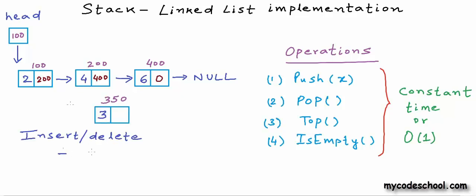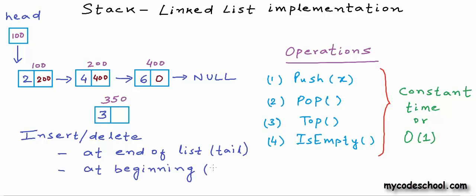We have two options. We can insert or delete from the end of the list, what we also call the tail, or from the beginning of the list, that we call the head. If you remember from our previous lessons, inserting a node at the end of a linked list is not a constant time operation. The cost of both insertion and deletion at the end of a linked list is O(n). In the definition of stack, push and pop operations should take constant time, O(1). To insert a new node at the end, we need to go to the last node and set its address field to point to the new node.